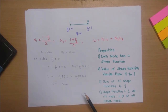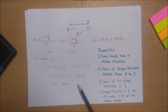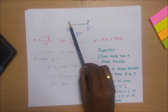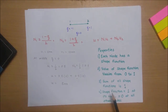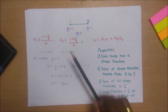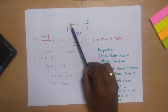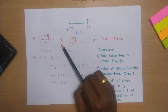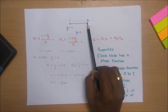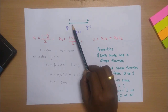Another important property: each shape function equals 1 at its own node and 0 at all other nodes. For example, N1 has a maximum value of 1 at node 1 but is 0 at all other nodes in the system. Similarly, N2 has maximum value 1 at node 2 and is 0 at all other nodes.